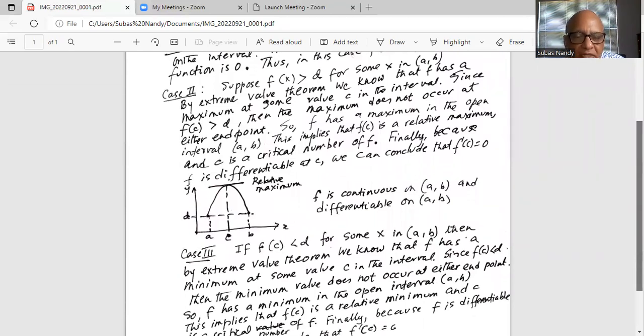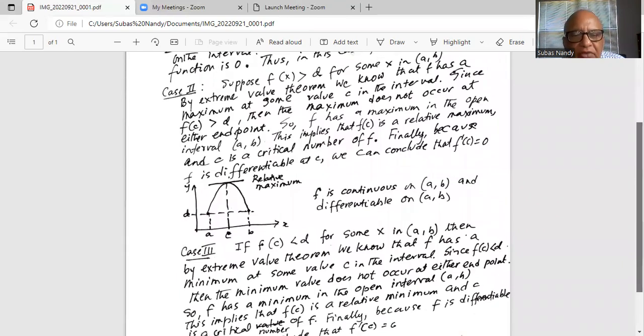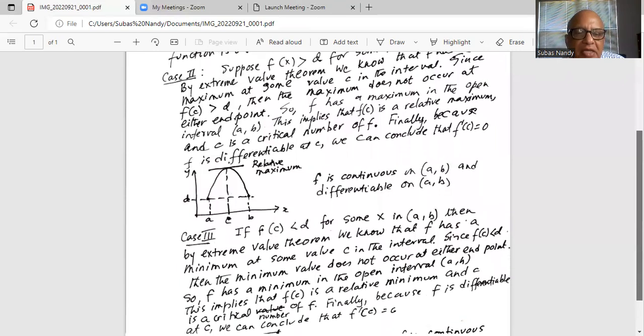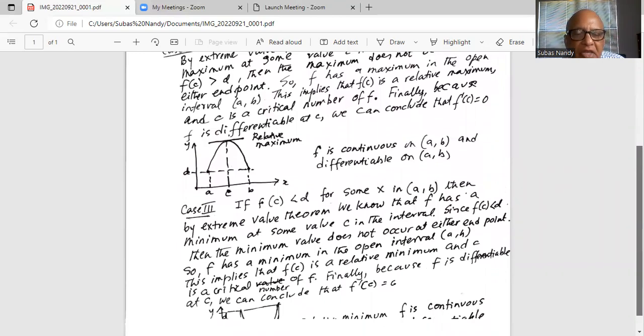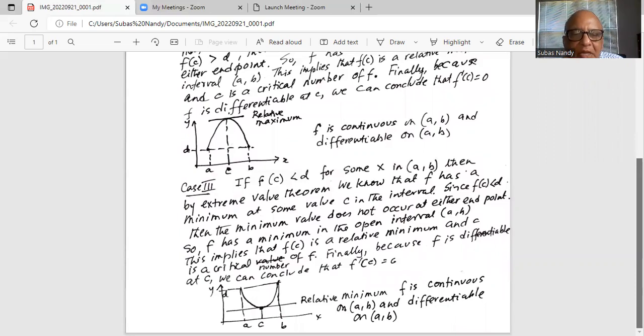Case 3: Let f(x) less than d for some x in (a, b). Then by extreme value theorem, we know that f has a minimum at some value c, and that is shown in the diagram below. So f has a minimum at some value c in the interval [a, b]. Since f(c) is less than d, remember the value of the function at x equals a and at x equals b is d, and the value of the function at c is less than d. Then the minimum value does not occur at either endpoint. So f has a minimum in the open interval (a, b). This implies that f(c) is a relative minimum and is a critical number of f. Finally, f is differentiable at c and we can conclude that f prime of c is equal to 0.